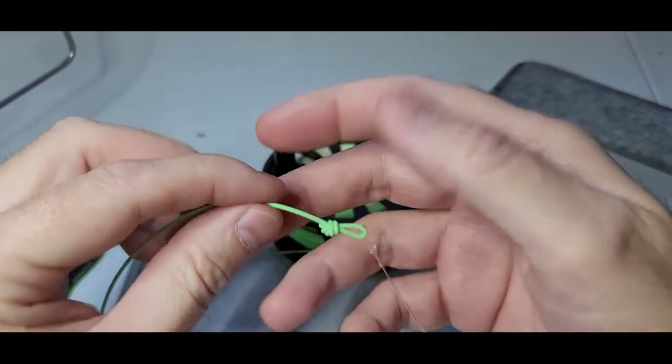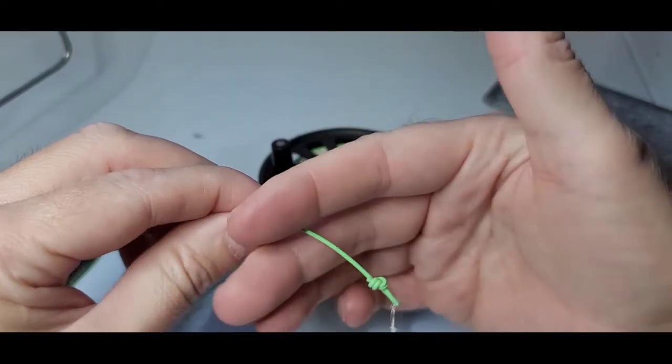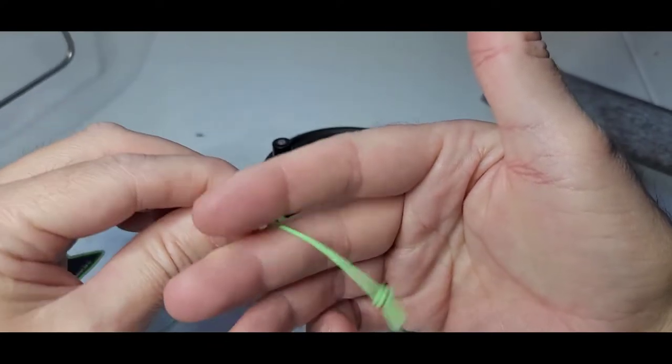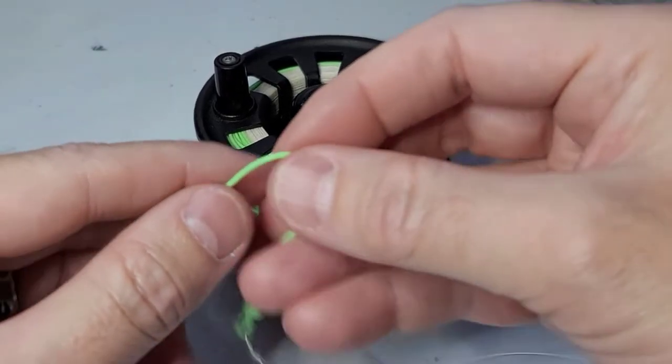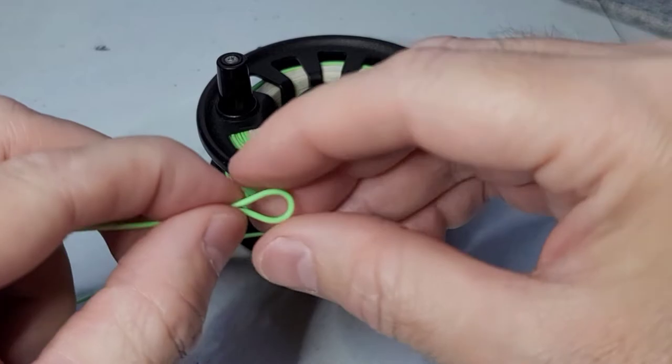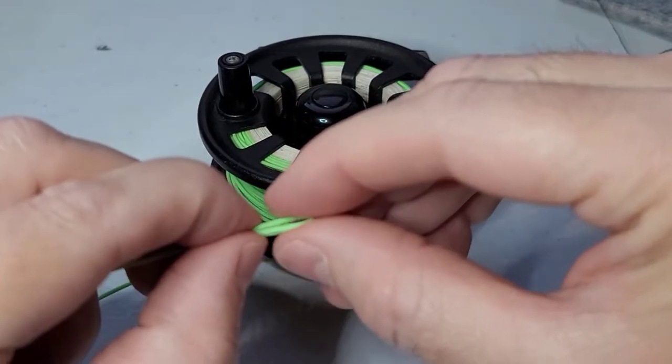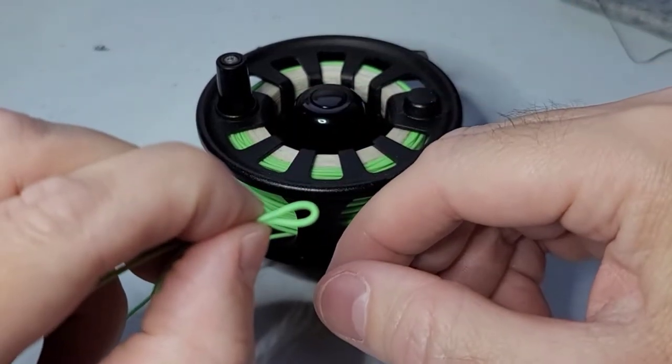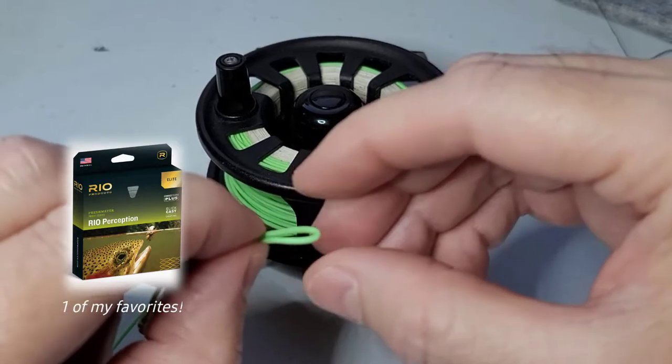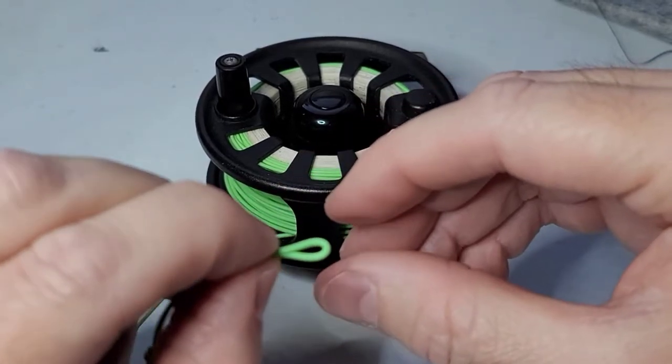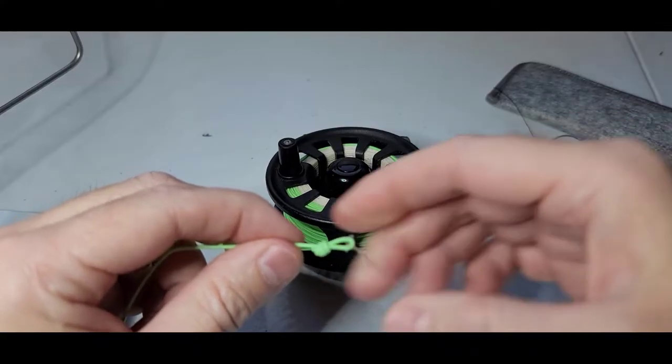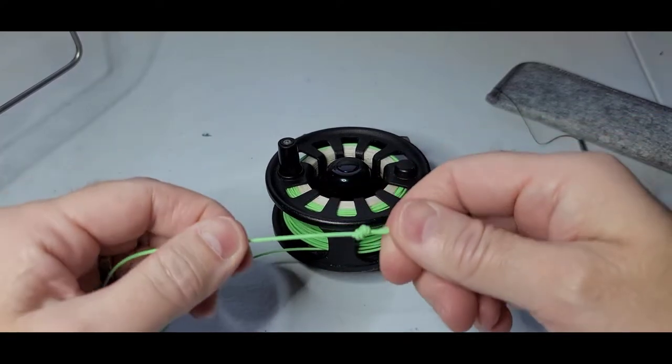So when it's going through your rod, your rod eyes, it's gonna go like bump bump bump. Most of your good fly lines, they're gonna come with a welded loop and there's not gonna be any knots. It's just gonna be a nice seamless loop.